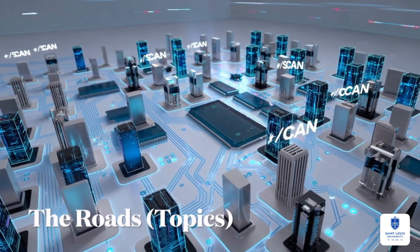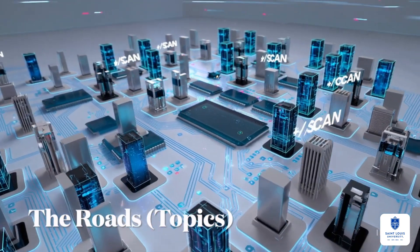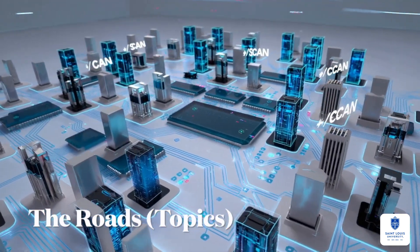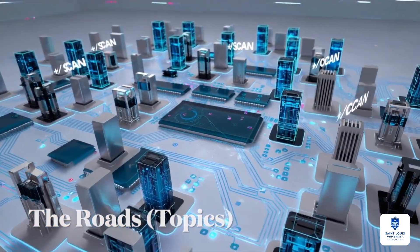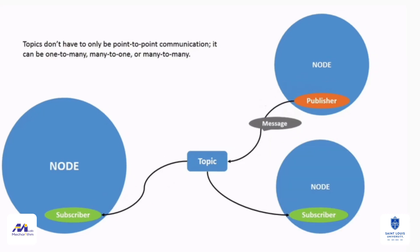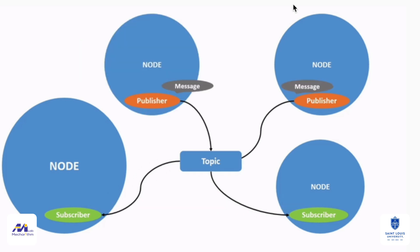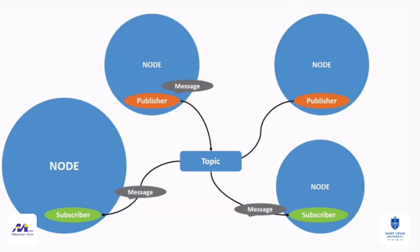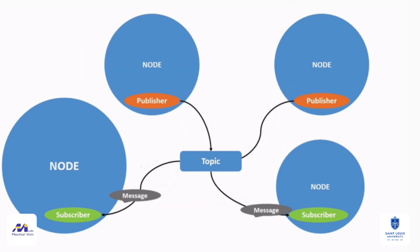Buildings must communicate, not by shouting across courtyards, but via roads. In ROS 2, these roads are topics — named communication channels. A road labeled /scan carries streams of LIDAR data. Another, /cmd_vel, carries velocity commands. The road network provides order, preventing chaos in the city's traffic of information.